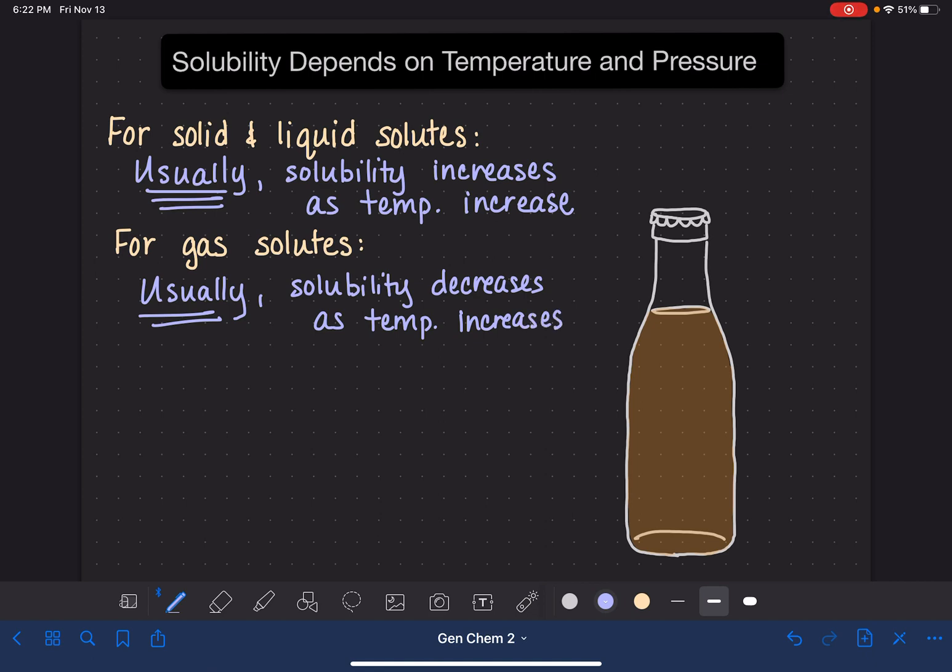So what this means practically is that if you have a solution that has a dissolved gas solute in it, if you increase the temperature of the solution, this is going to cause the solubility of the gas to decrease. We might see, literally, the gas solutes bubbling up out of a solution.